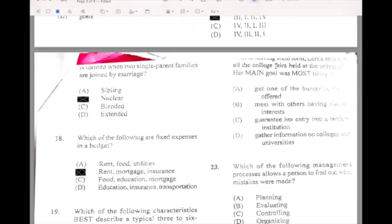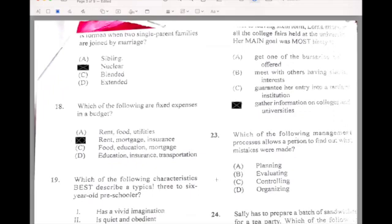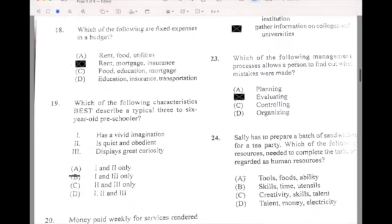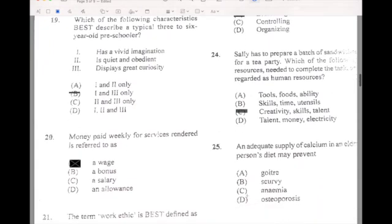You remember the question in 2008, we were talking about a student that went to the college fair for the university, and what was her main goal? We are assuming the question is similar to this one, and these are the options or the responses that they have. She gathered information for her university. I'm really sorry about the quality of the paper, but let us see what best we can read. Twenty-three, which of the following management processes allow a person to find out what mistakes have been made? You have to do evaluation. Twenty-four, Sally is to prepare a batch of sandwiches for a tea party, which of the following resources needed to complete tasks regarding human resource. Twenty-four will be C, so she has creativity skills and talent. This deficiency of calcium in an older person may develop osteoporosis, and our answer will be osteoporosis.